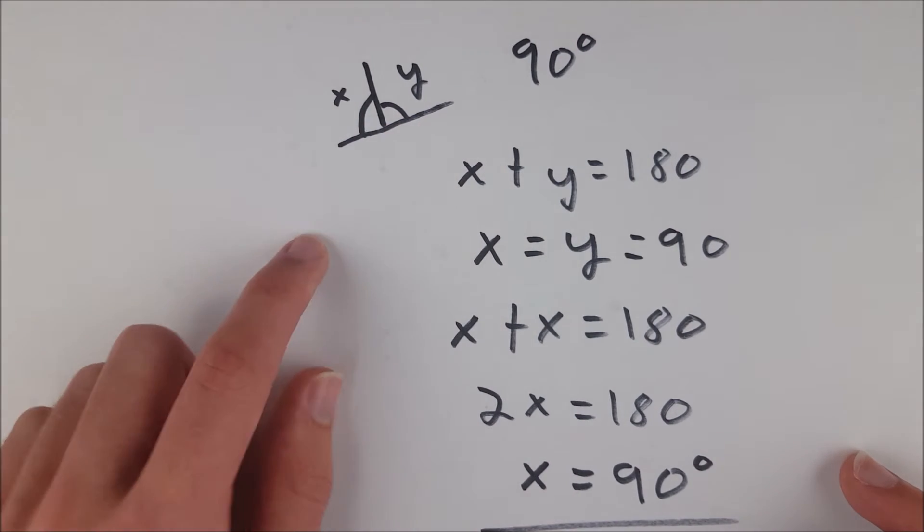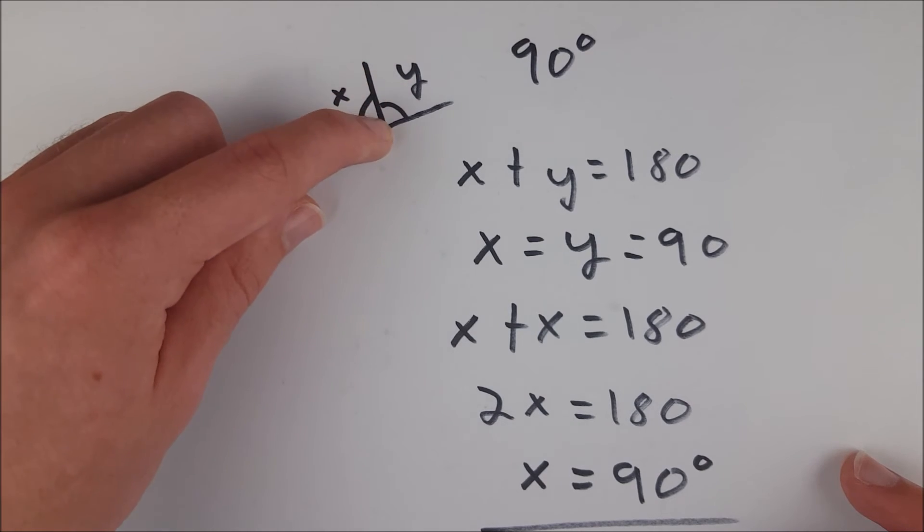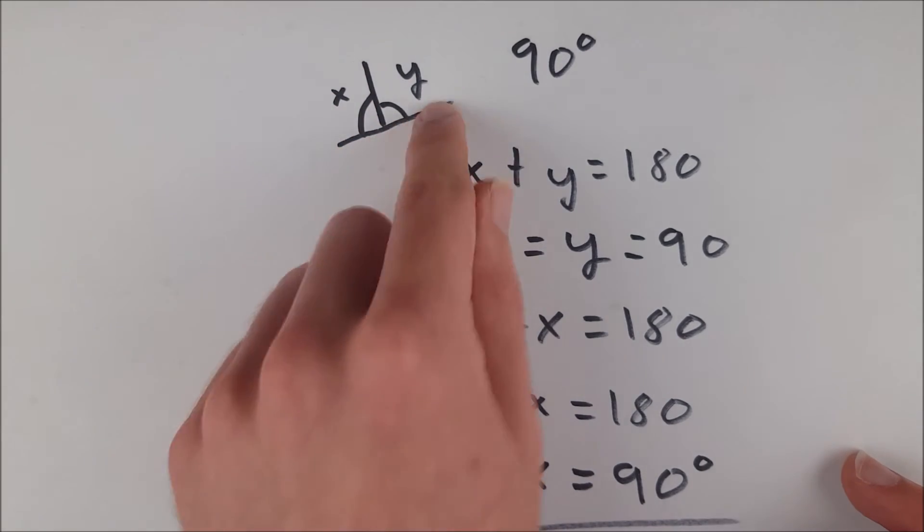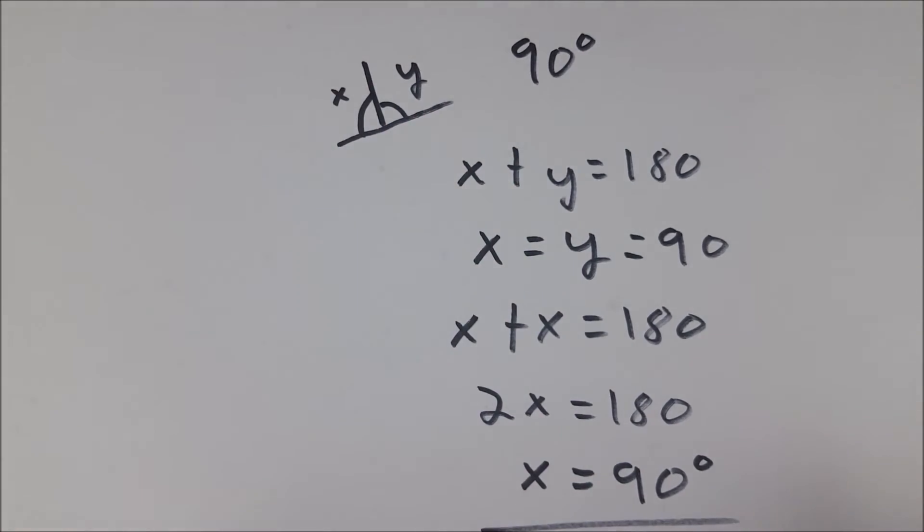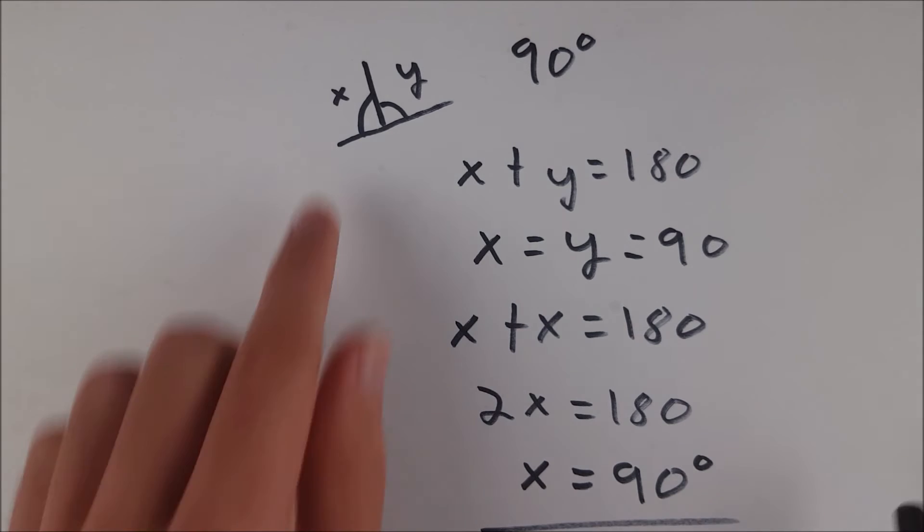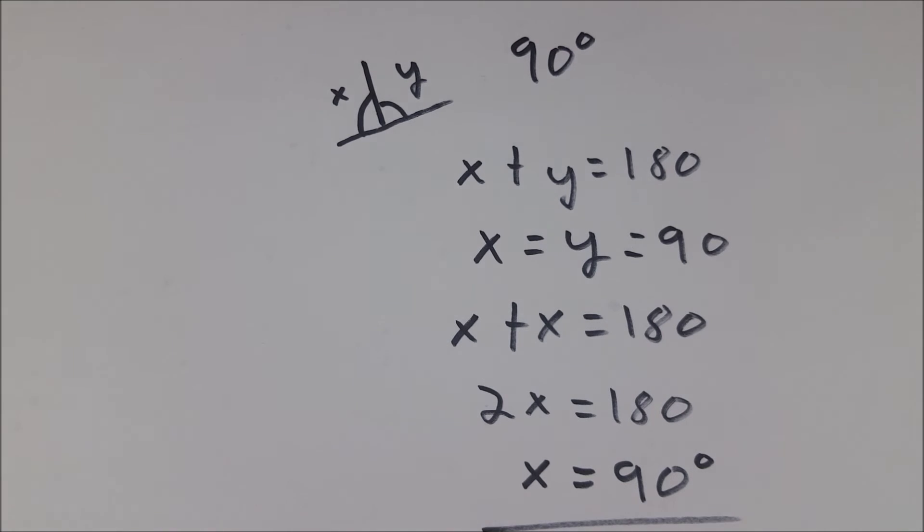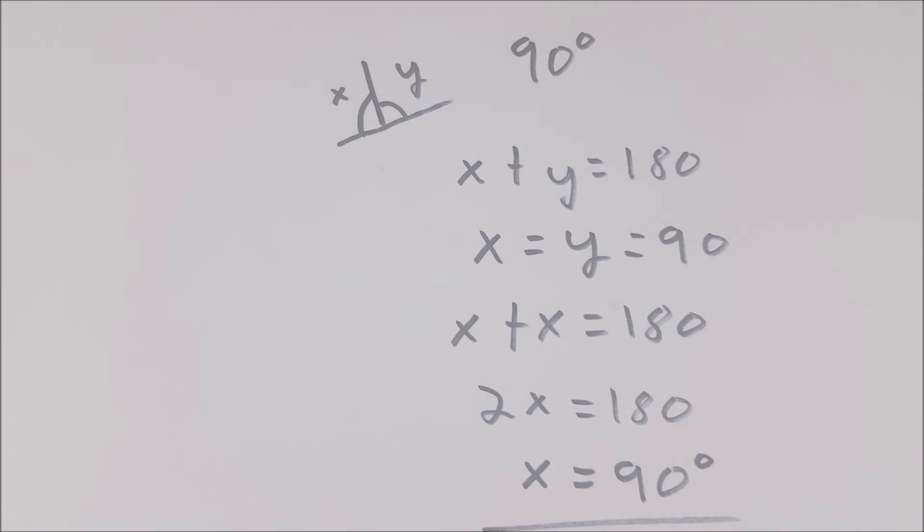And wherever this angle is created, of course, we know that the line creating that angle is perpendicular, like we see here. So I hope this video helped you understand the proof that congruent supplementary angles are 90 degrees. Now you know why that is. If you didn't before, let me know in the comments if you have any questions, need anything clarified, or have any other video requests. Thank you very much for watching. I'll see you next time and be sure to subscribe for the swankiest math videos on the internet.